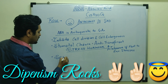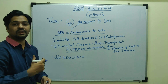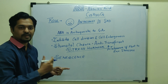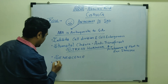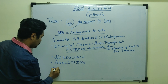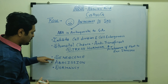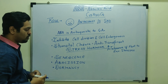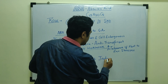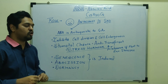Abscisic acid induces senescence — meaning aging. While gibberellins delay senescence, abscisic acid promotes it, and ethylene also promotes senescence, so ethylene and abscisic acid have a synergistic action here. It also induces abscission and dormancy — in seeds and buds. So senescence, abscission, and dormancy are all induced by abscisic acid, making it a plant stress hormone.